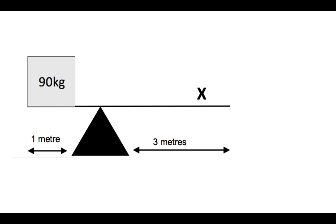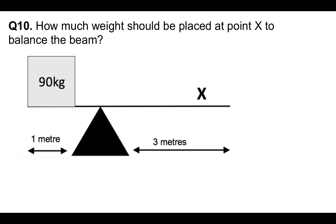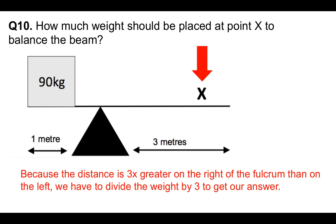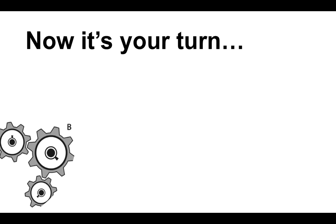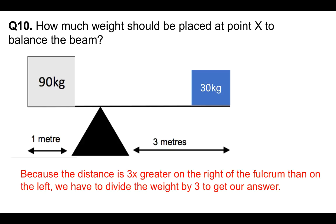Question number ten — these are common questions, I see them all the time. How much weight should be placed at point X to balance the beam? Because the distance is three times greater on the right of the fulcrum than on the left, we have to divide the weight by three to get our answer. That's the fulcrum point there. The weight is three times greater on the right than on the left, so we simply divide the weight by three. The answer is 30 kilograms.